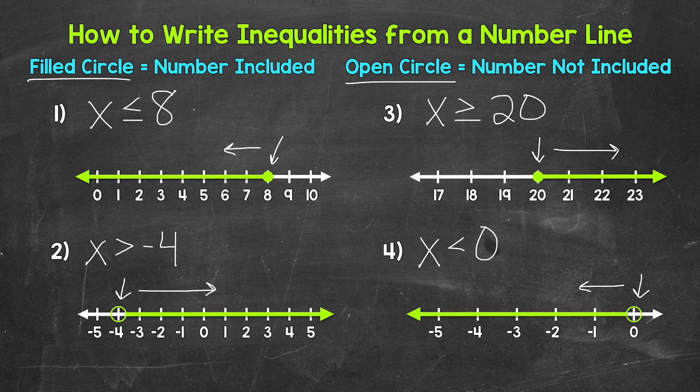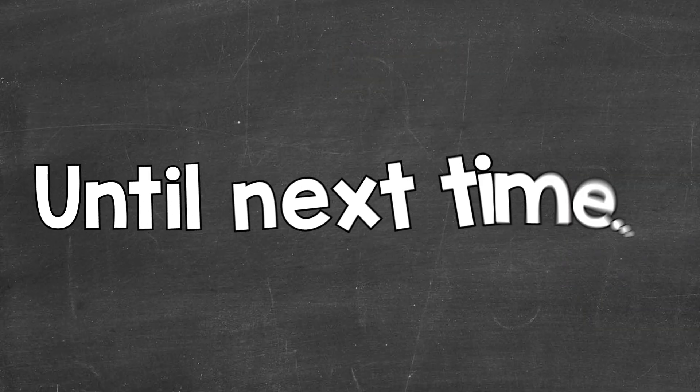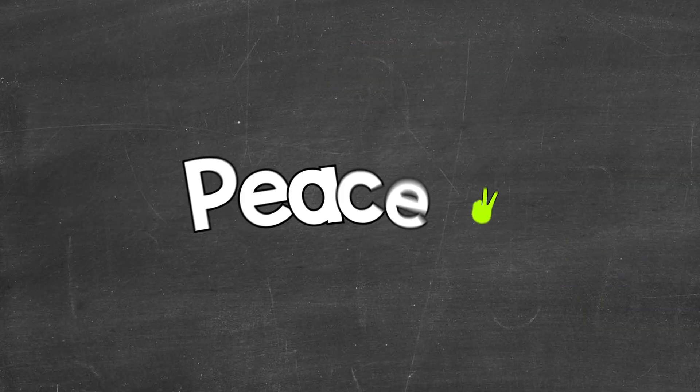So there you have it — that's how to write inequalities from a number line. Check to see if you have a filled circle or an open circle. Then check to see which direction the arrow is going — towards all of the numbers greater than, or less than, whatever number you're looking at. Then you can write an inequality based on that. I hope that helped. Thanks so much for watching. Until next time, peace.